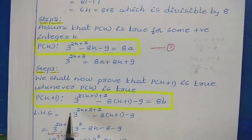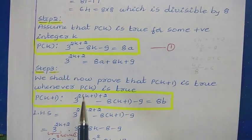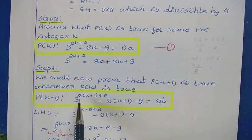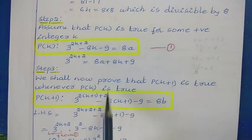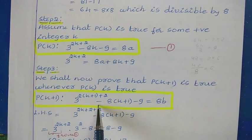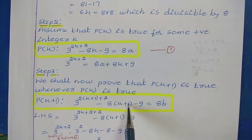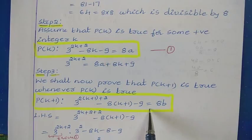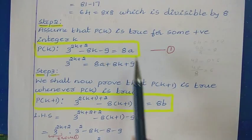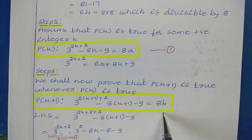So P of k plus 1: 3 to the power 2 into (k plus 1) plus 2, minus 8 into (k plus 1) minus 9, is equal to 8b. Here I have written 8a for P of k and 8b for P of k plus 1, since the question states the value is divisible by 8.